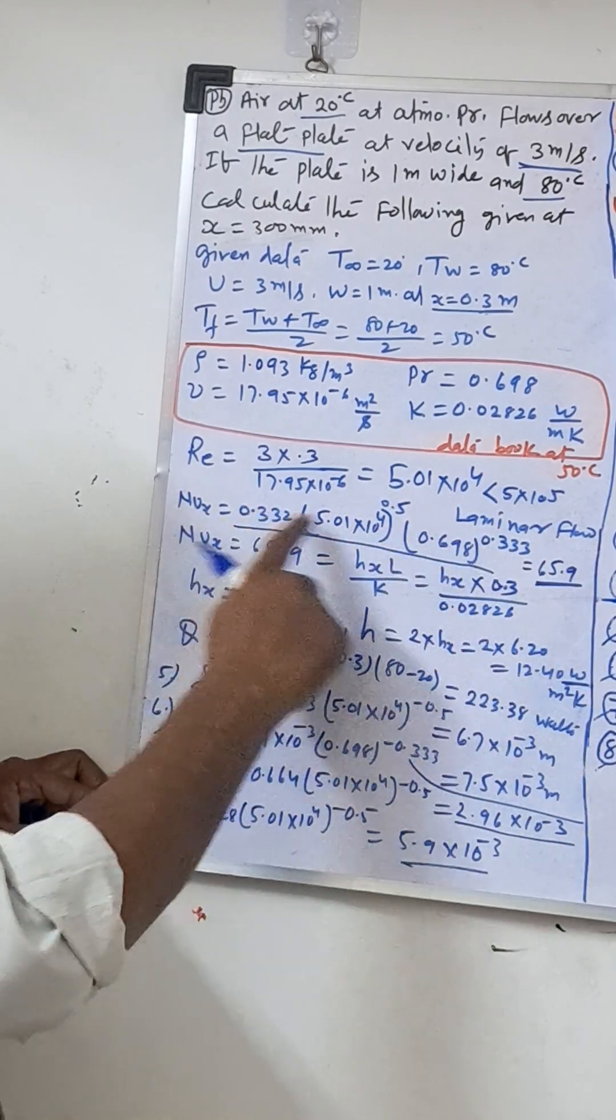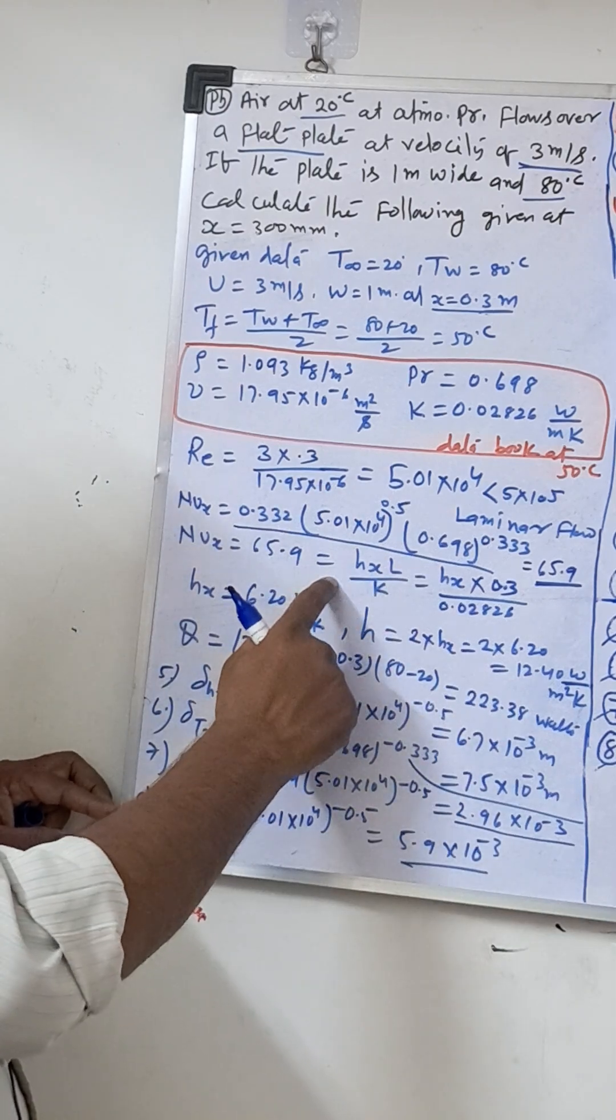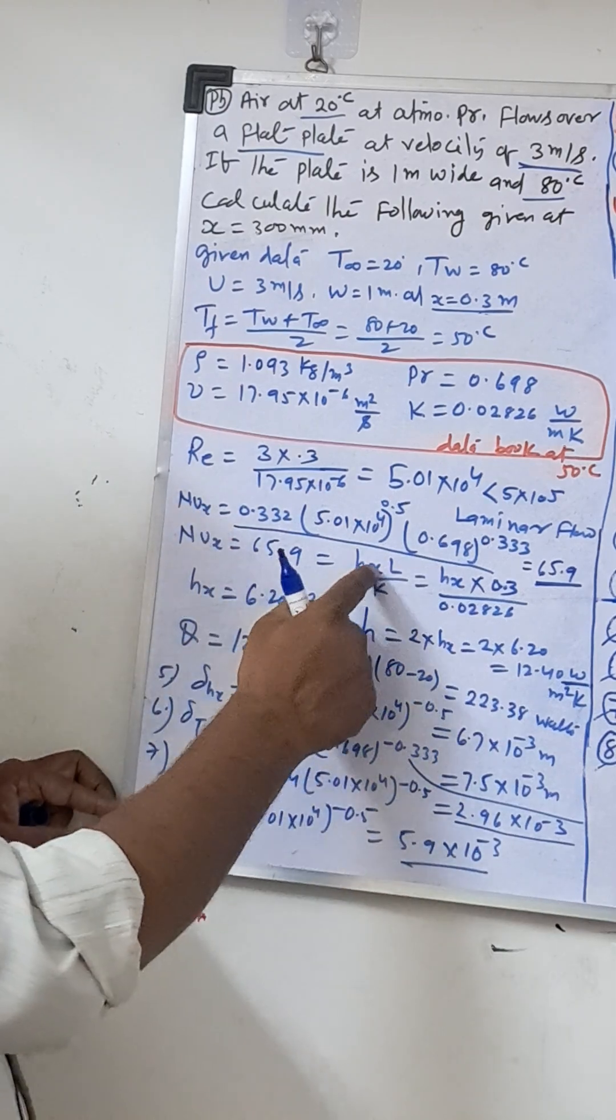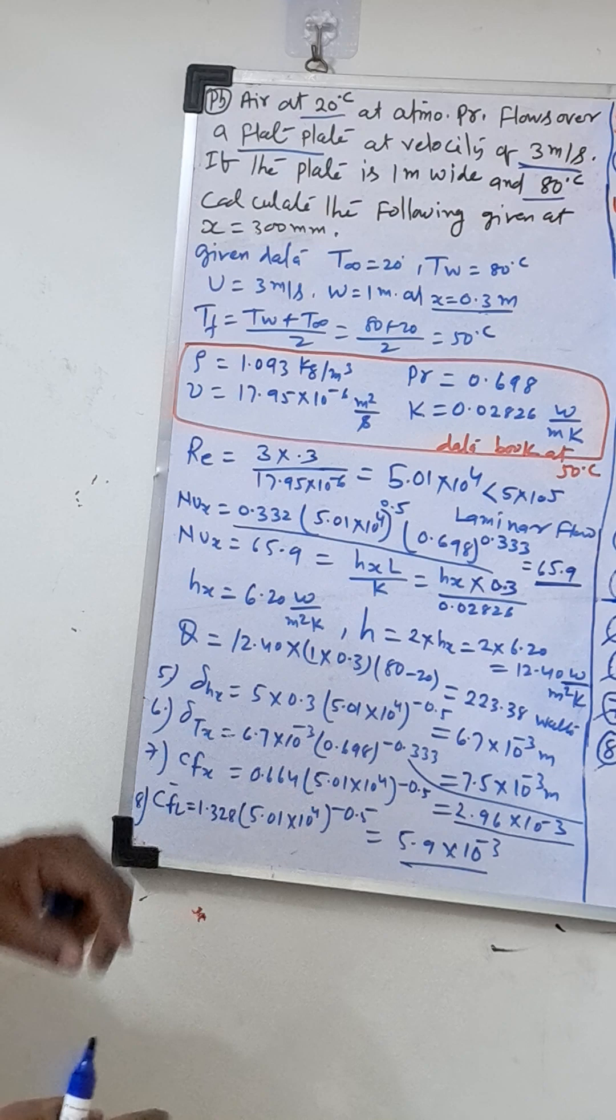So this is the local Nusselt number formula. We will substitute the value. We will get the local Nusselt number.